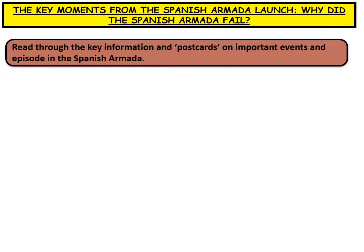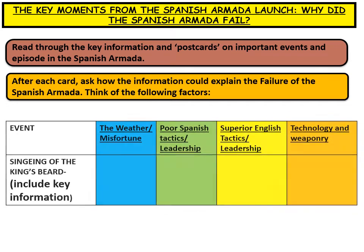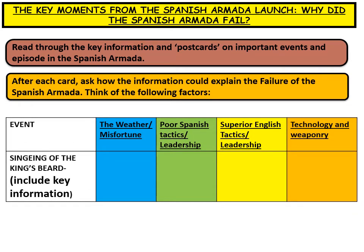Each slide is going to represent a postcard — a moment of an important event or episode in the Spanish Armada. After each card I'm going to ask you how the information could explain the failure of the Spanish Armada, and I'd like you to complete the following table. Think about these factors: weather or bad luck, poor Spanish tactics and leadership, or superior English tactics, leadership, technology and weaponry. Make sure you make your event section bigger than the other areas and include key information about what is happening each time.